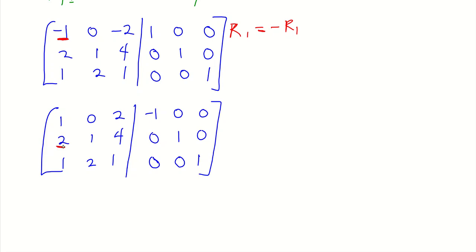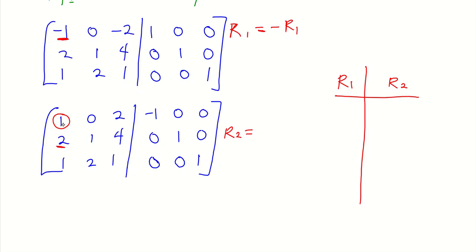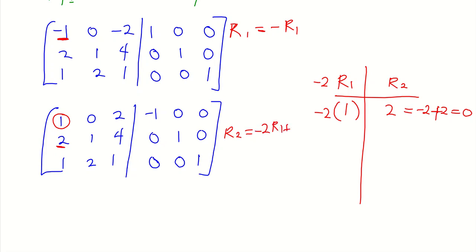The next step is to change the 2 in row 2, column 1 to 0 by considering the pivot in row 1. Since the effect is going to happen in row 2, we write: row 2 is equal to... The first entry in row 1 is 1 and the first entry in row 2 is 2. We ask: what must we do so that these two elements when added go to 0? If we multiply row 1 by minus 2 and add, minus 2 plus 2 gives 0. So our formula is: row 2 = minus 2 times row 1 plus row 2.